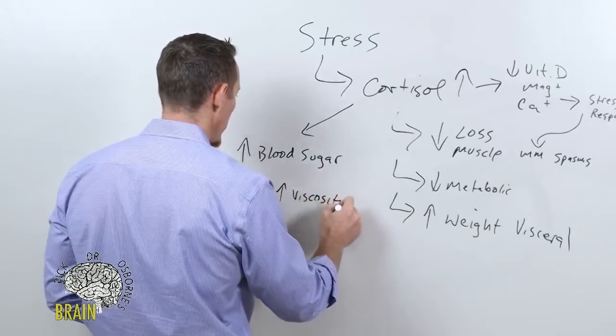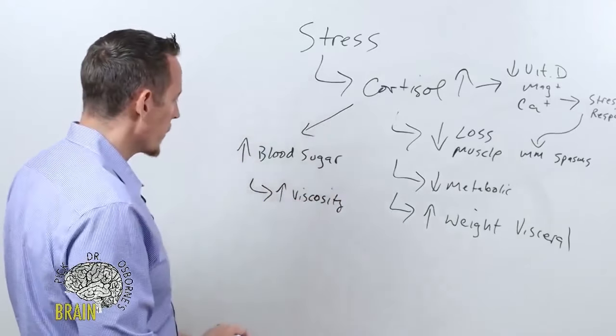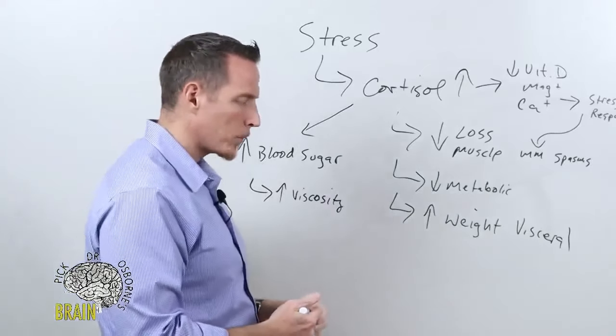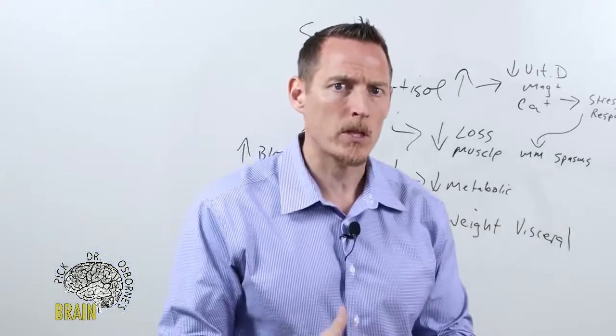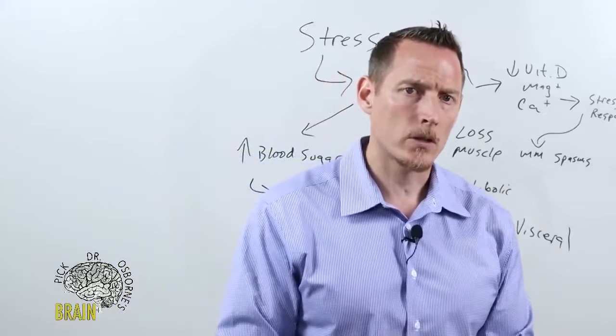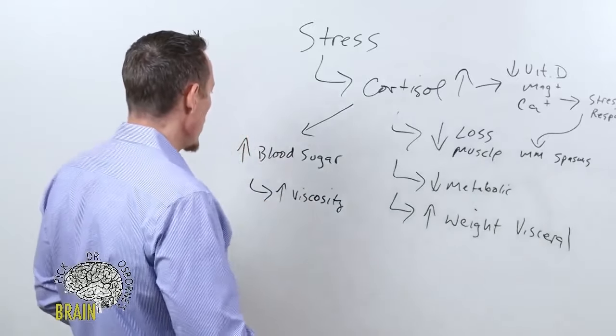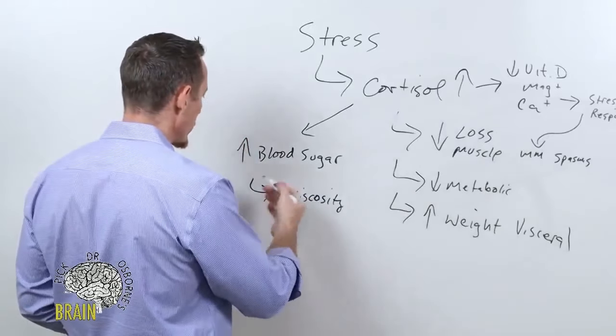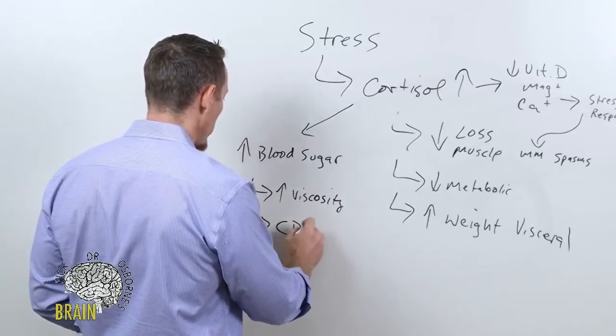That blood sugar heightens, it increases blood viscosity, so we get a thicker blood because it glycates the proteins in the blood. The blood viscosity increase puts more pressure on your heart and on your vascular tree, makes it harder for blood and oxygen to get into those tissues. That increase in blood sugar and viscosity increases the risk for chronic degenerative disease.